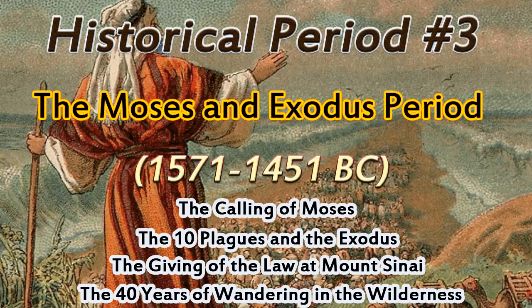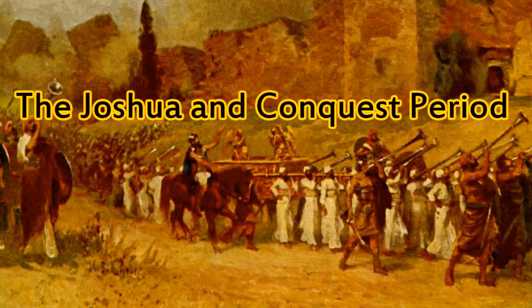And number four, the 40 years of wandering in the wilderness. This was when the children of Israel would not believe in the promises of God, and they desired to go back to the land of Egypt and back into slavery again. When they came to Kadesh Barnea to look over the land that God had promised them, they sent 12 spies to look over the land. But when they heard that there were giants, they became afraid, and only Joshua and Caleb had the courage to move with the promises of God. This lack of faith caused them to wander in the wilderness for 40 years.